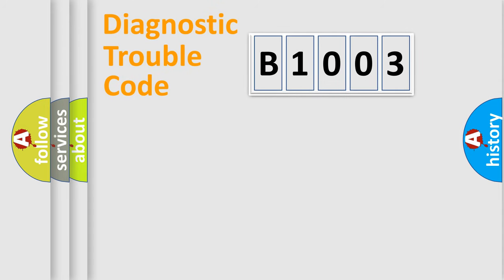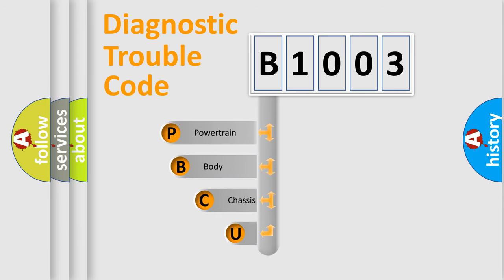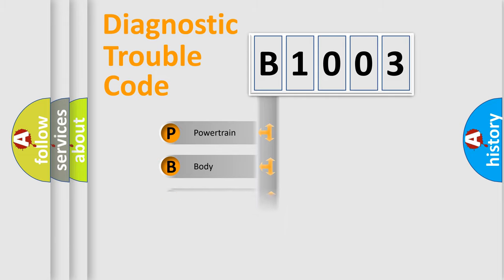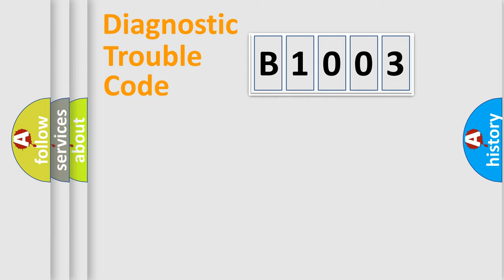First, let's look at the history of diagnostic fault code composition according to the OBD2 protocol, which is unified for all automakers since 2000. We divide the electric system of the automobile into four basic units: Powertrain, Body, Chassis, and Network. This distribution is defined in the first character of the code.